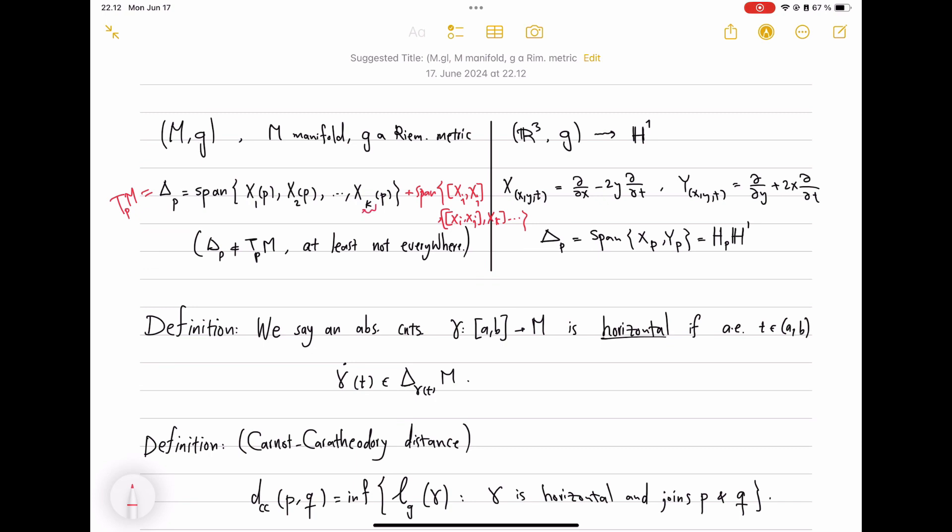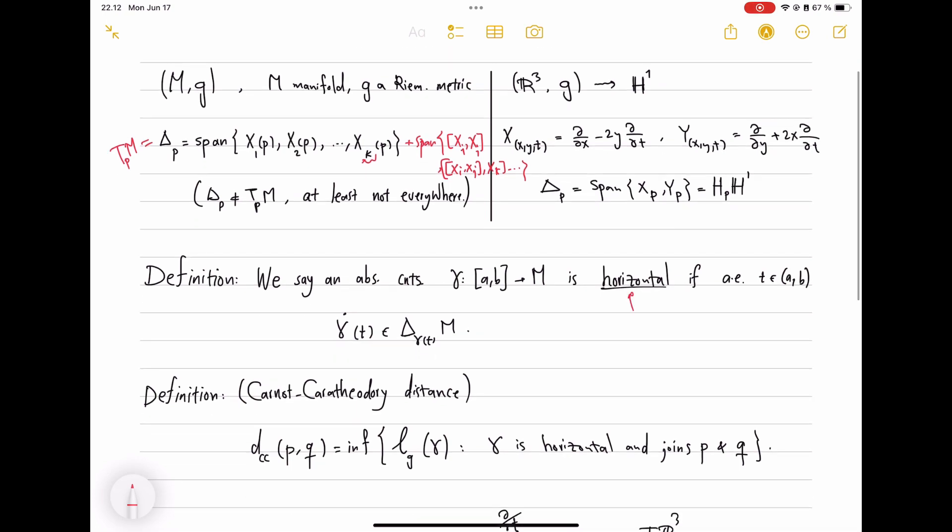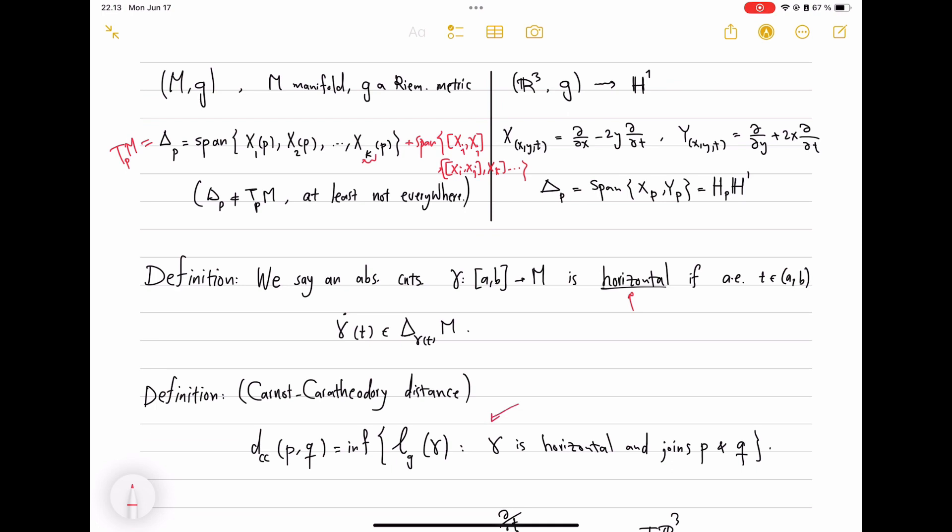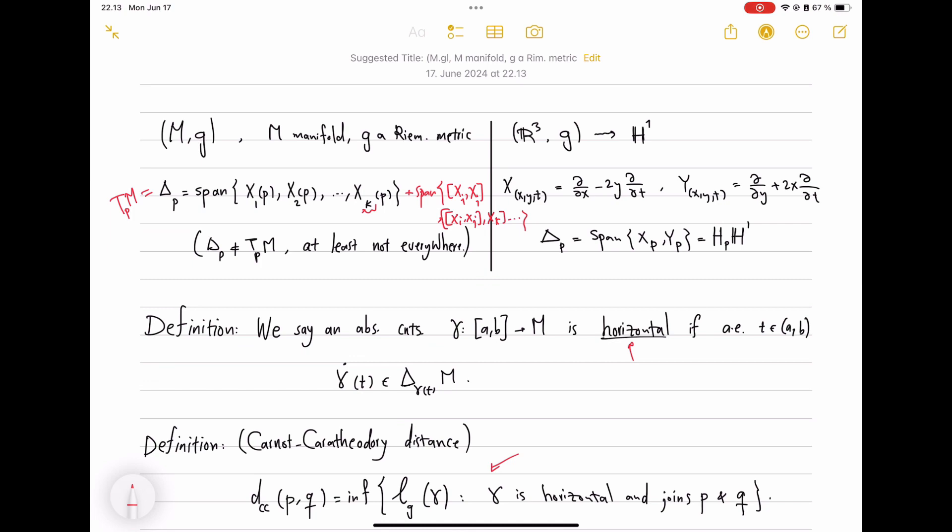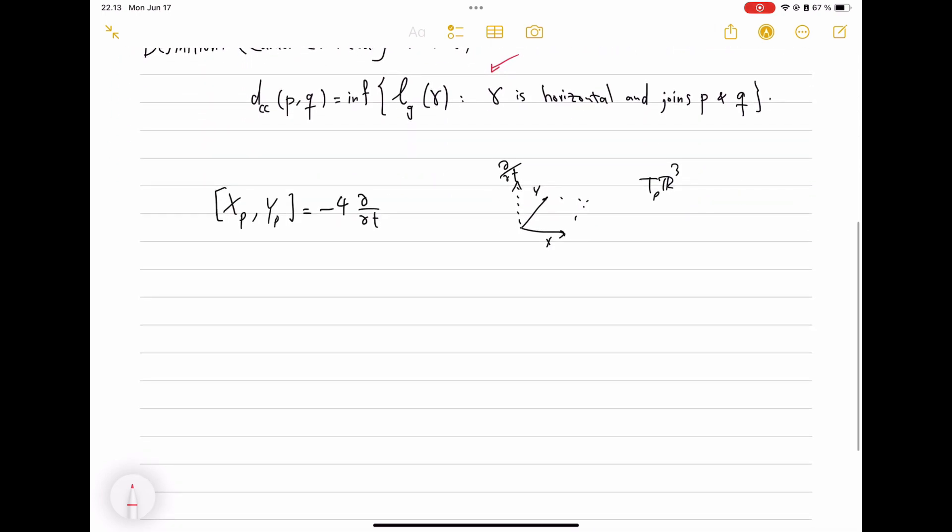There are a lot of variations and a lot of subtleties here. For example, this k here might not be the same from one point to another. Sometimes this span could already be the whole space. But if that happens everywhere, then we're just talking about the Riemannian manifold because every curve would be horizontal and this will be just the usual distance we define on manifolds. So at least not everywhere it is the case that the span delta p is all of TPM. But if the brackets help span the whole TPM, we call it bracket generating.